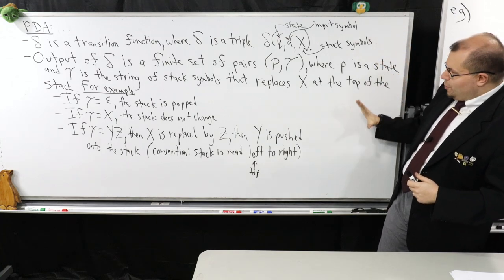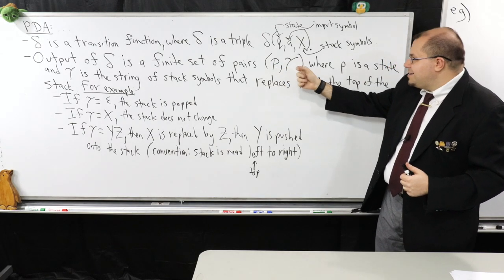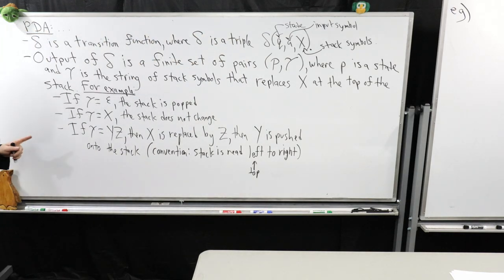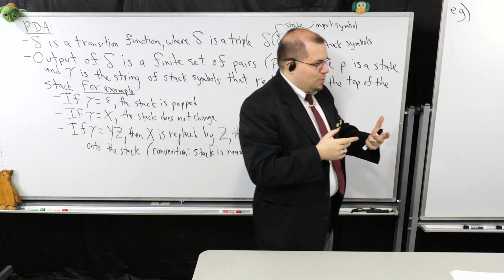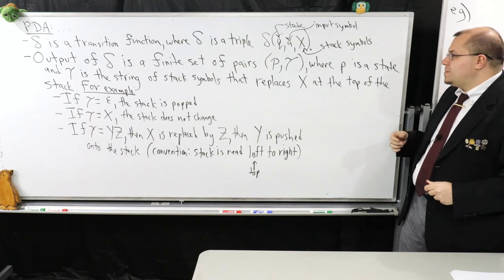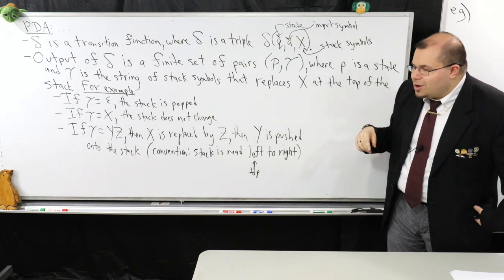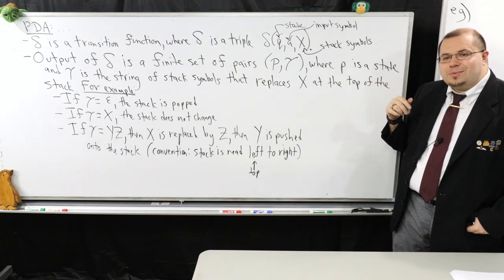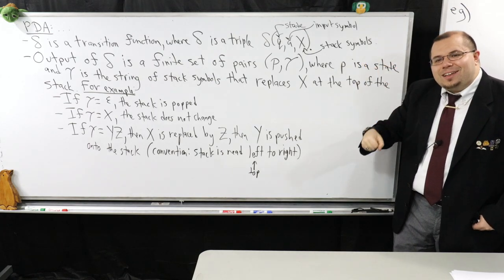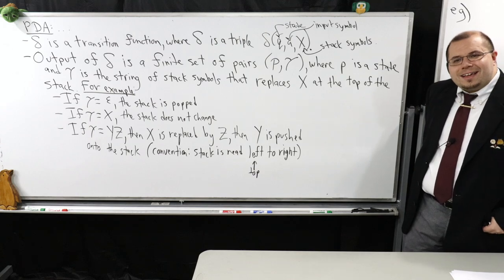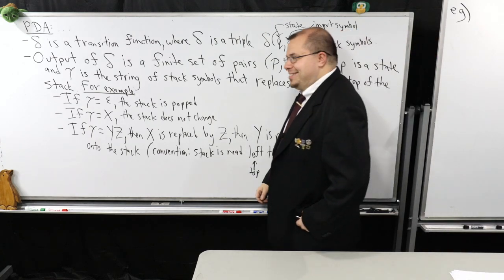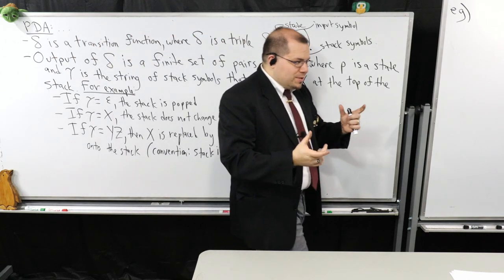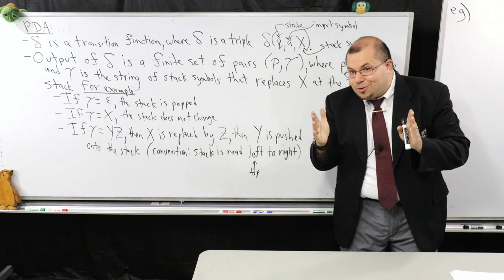Does everybody understand the idea of what the output of this thing should look like? It should give you a state and the string of stack symbols for replacing the top of the stack. It's not just a state anymore — now it's a pair: a state and what we're going to replace on the top of the stack. If epsilon pops the stack, it's because we replaced the top symbol with the empty string, eliminating x. The top of the stack plays a very important role in how we describe the PDA.